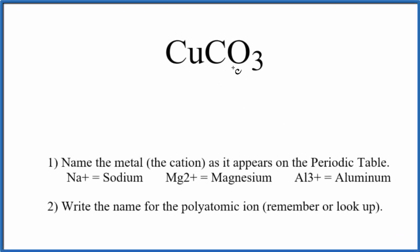To write the name for CuCO3, the first thing we need to recognize is that we have this polyatomic ion here. This is called the carbonate ion, and the carbonate ion is bonded to this transition metal, copper.